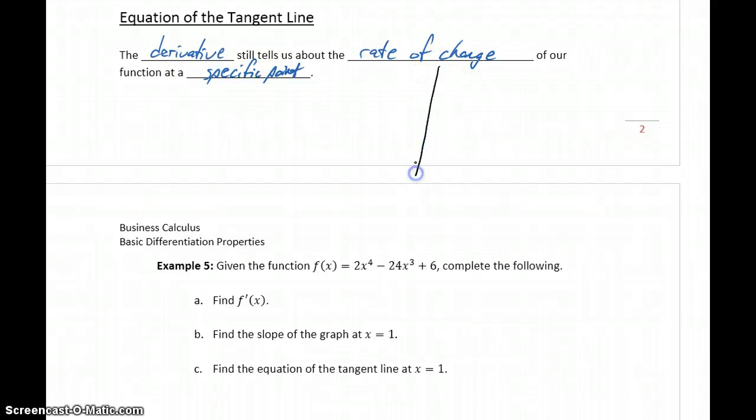So for some arbitrary function that we'll draw here, if this is our function f of x, once we find the derivative of that function, then we can plug in any value of x, say x equals a, and get the rate of change of our function at that specific point.